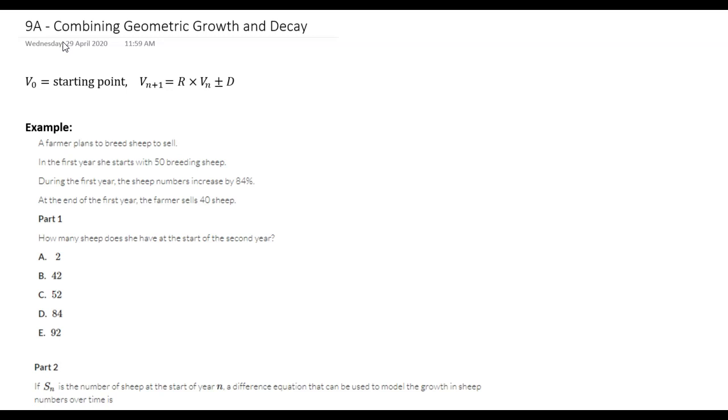In the last chapter we looked mainly at recurrence relations which describe sequences that were either arithmetic or geometric with just one operation.